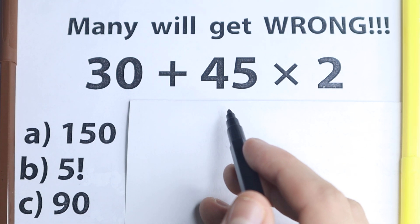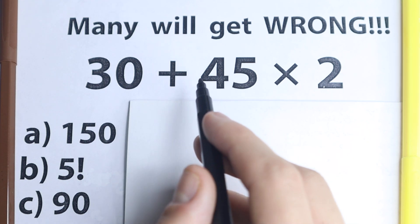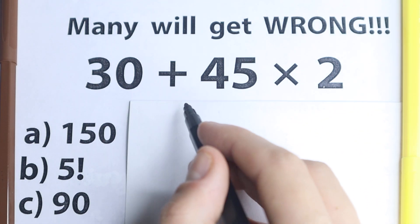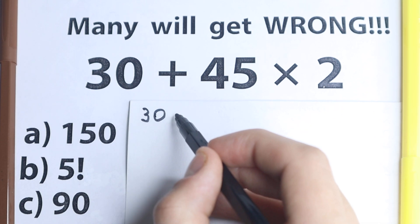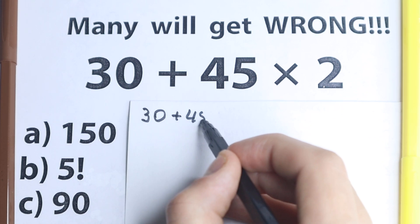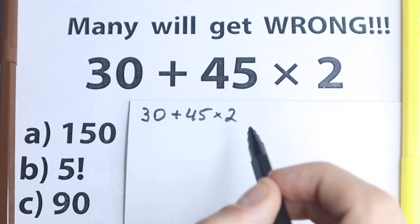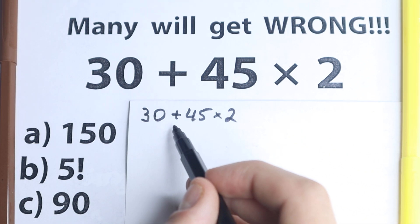But before solving this I'm going to show you the first obvious solution, but I don't want to tell that this is correct or incorrect. I just want to show you this obvious solution. A lot of students solve it like that: 30 plus we have 45 times 2. One part of students solve it like that, they say ok, 30 plus 45, let's start with this.